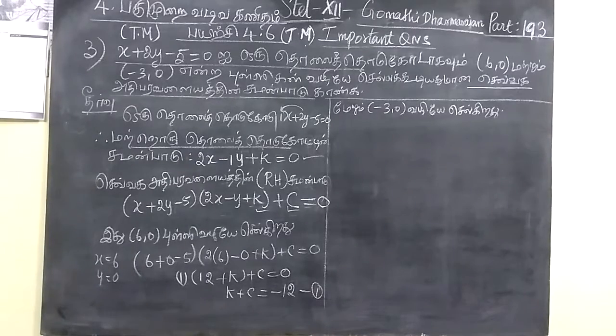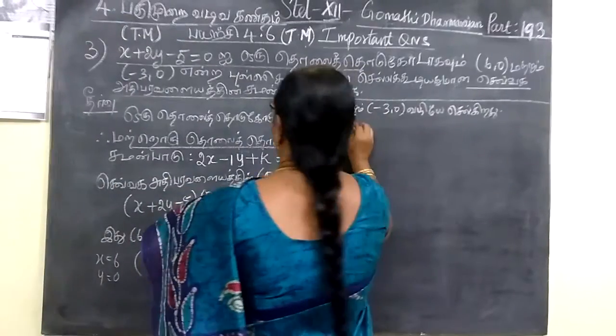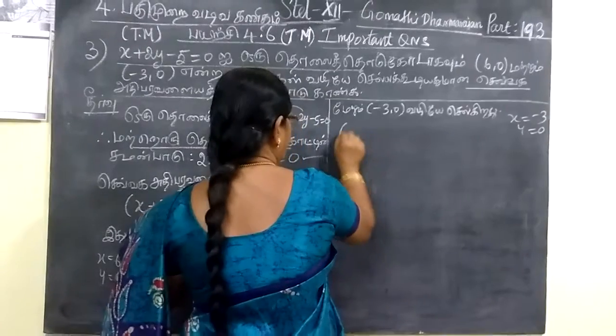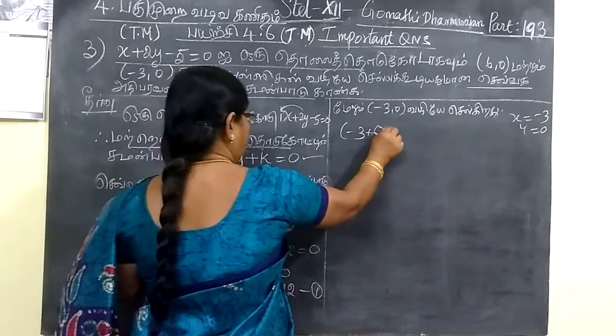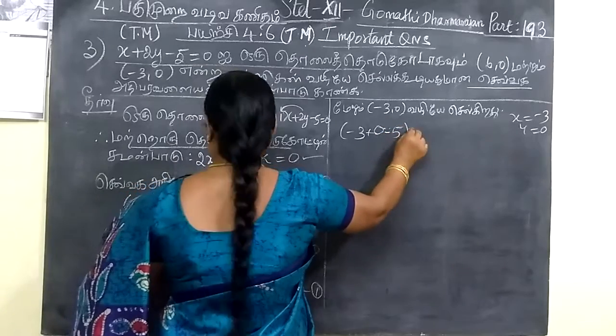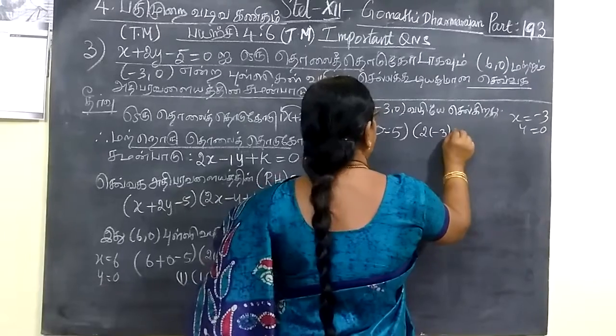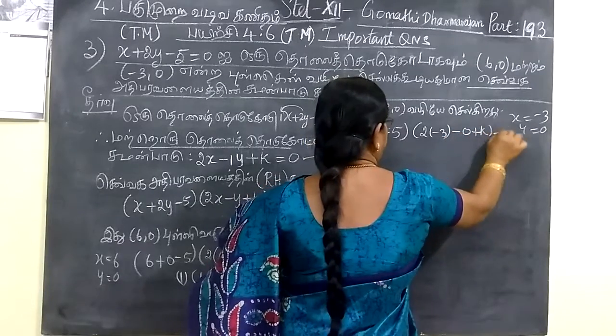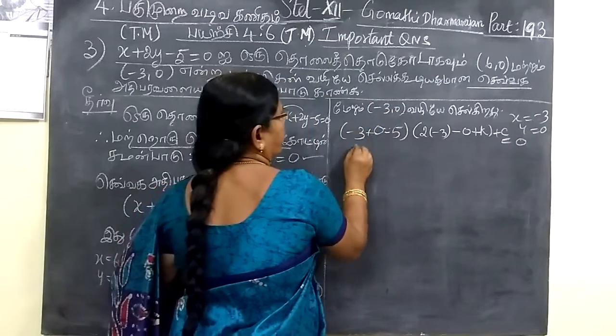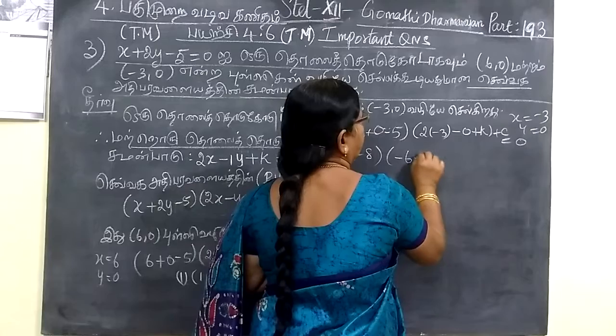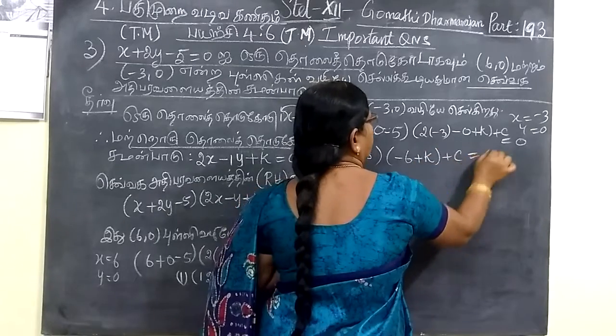Next we are doing the next one. Here x value is -3, y value is 0. So x value -3, y value 0. Put in the equation: 2 bracket -3 minus 0 plus k plus c equal to 0. So minus 6 plus k plus c equal to 0.